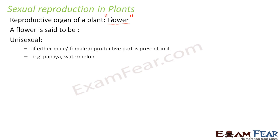A flower is said to be unisexual if either the male or the female reproductive part is present in it. The word 'uni' itself means one, so unisexual means only one sex is present inside that flower. Either the male part is present or the female part is present. The male part will produce the male gamete, and the female part will produce the female gamete. Both will not be present in the same flower, so that kind of flower is known as unisexual.